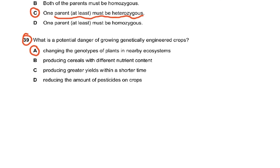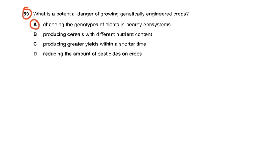Question 39 asks what is a potential danger of growing genetically engineered crops. Greater yield and reducing pesticide use are good things, not dangers. The danger is changing the genotype of plants in nearby ecosystems — if pollen from GM crops is transferred to wild plants, that could be disastrous. That is one of the key dangers of genetic engineering, and it was considered a challenging question.